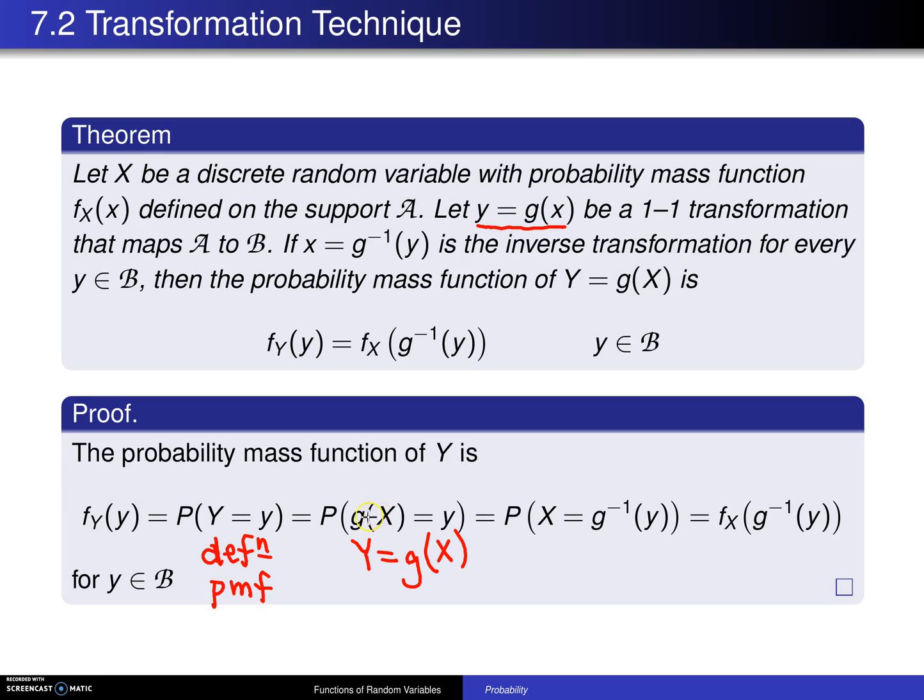Next, you take the equality g of X equals y, and you take g inverse of both sides. What allows you to take g inverse? We have already assumed that it is a one-to-one transformation, and one-to-one functions have inverses, so the one-to-one assumption is being used here.